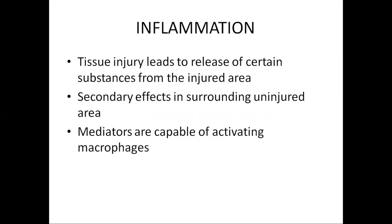Whenever there is a tissue injury — which can be in the form of chemicals, heat, bacteria, or any trauma — there is a release of multiple substances from the injured area. These substances in turn produce secondary effects in the surrounding uninjured area. The various mediators released by the tissues include histamine, bradykinin, serotonin, various reaction products of the complement system, the blood clotting system, and lymphokines, which can be released by sensitized T cells.